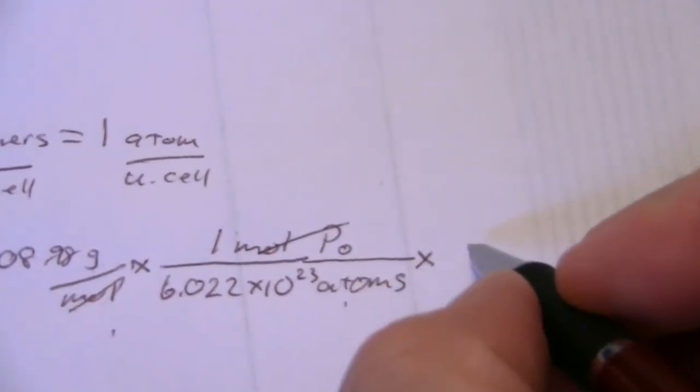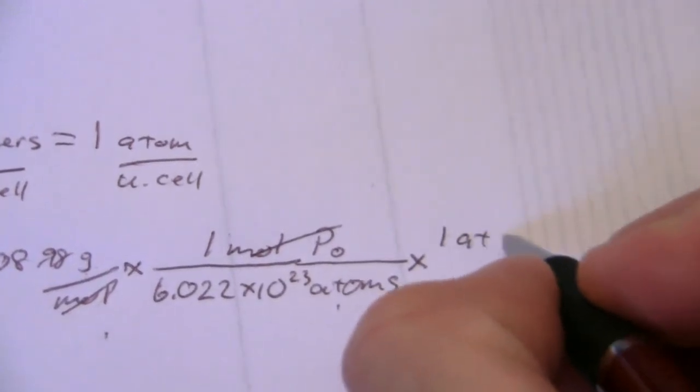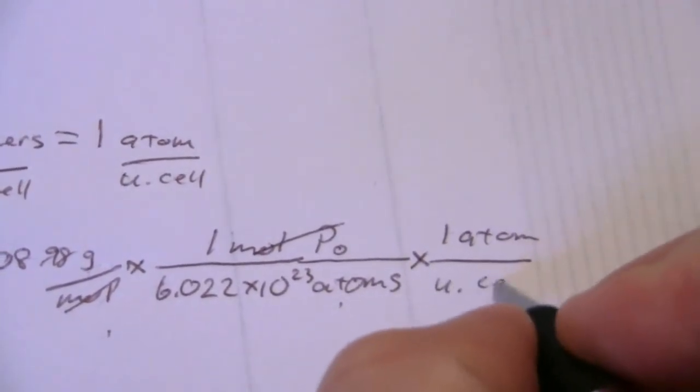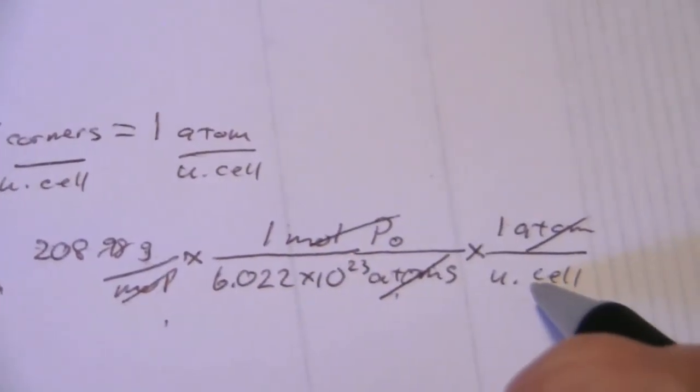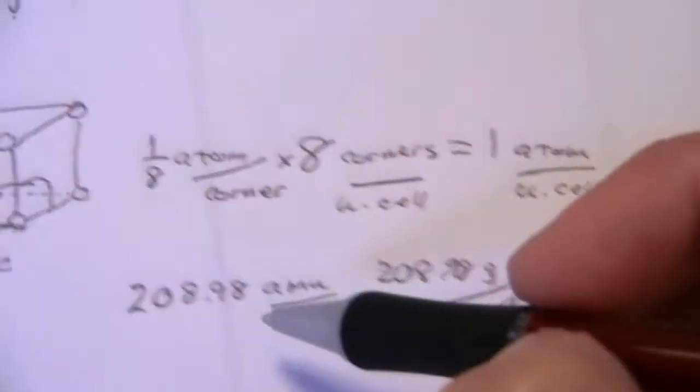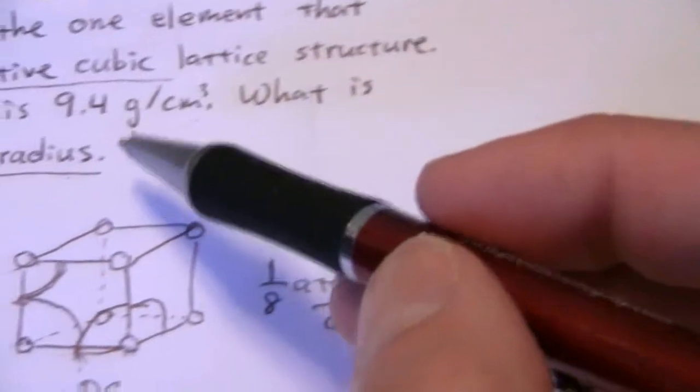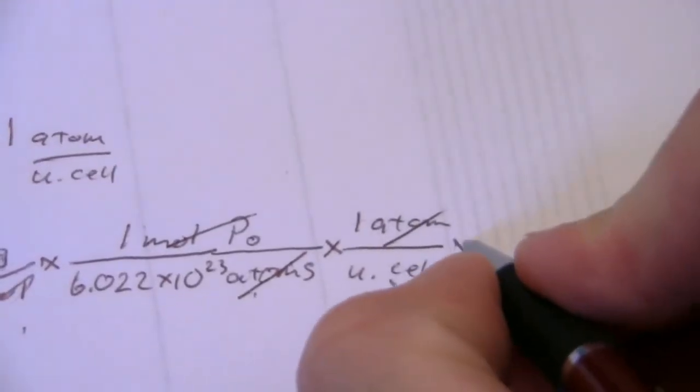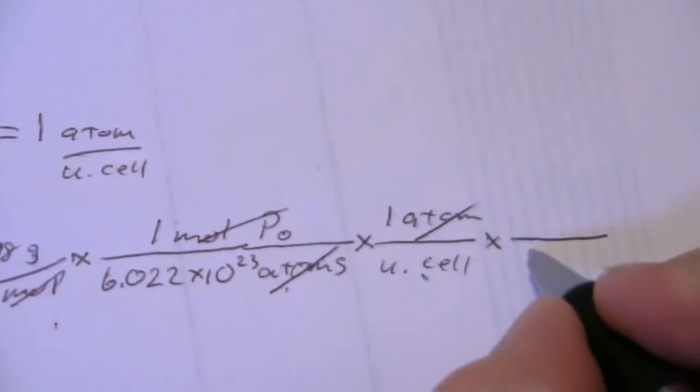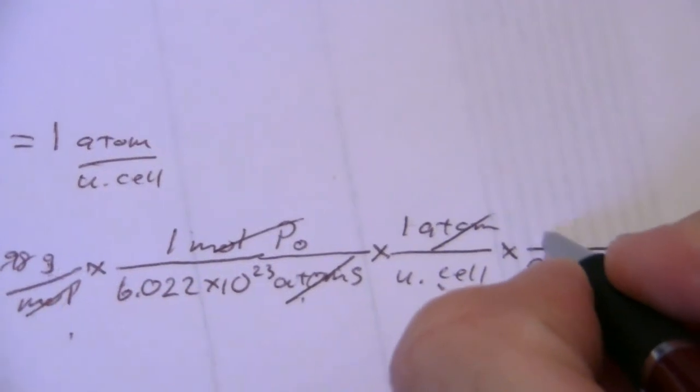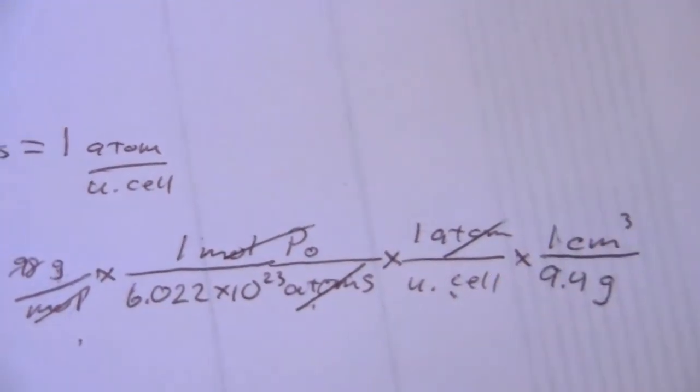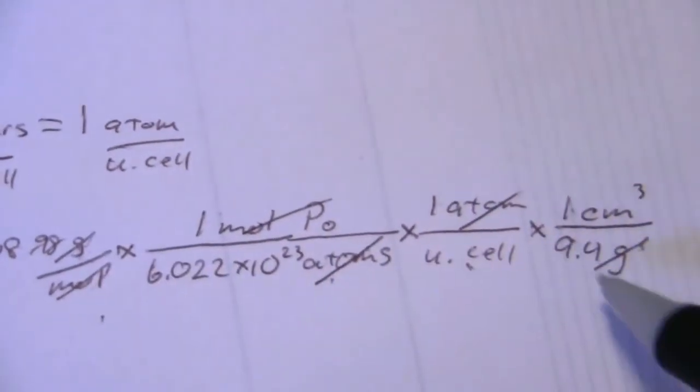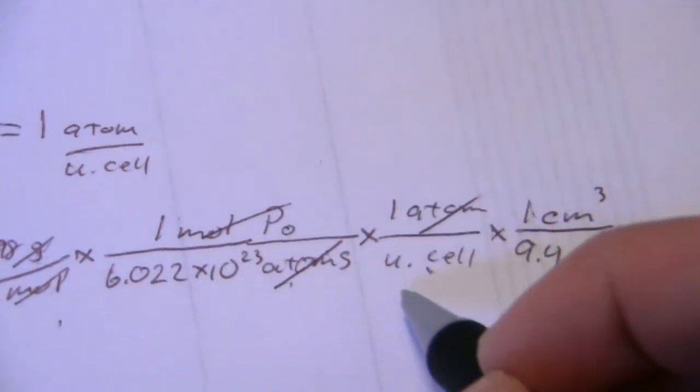So I can say, well, I know that I have one atom per unit cell. So now my atoms will cancel, and I'll have the mass within my unit cell. And using the density that's given here, 9.4 grams per cubic centimeter, I will cancel these grams, 9.4 grams per cubic centimeter. So now my grams will cancel, and I'm left with cubic centimeters per unit cell.